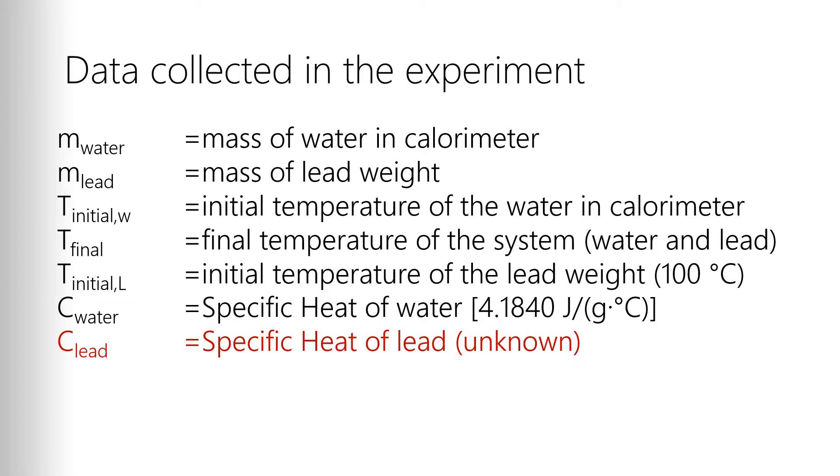Then we're going to measure a number of temperatures. We're going to measure the initial temperature of the water in the calorimeter and the initial temperature of the lead weight. Now the initial temperature of the lead weight is going to be equal to the boiling water it's placed in. Boiling water gets to 100 degrees Celsius, so if we leave the lead weight in there for a period of time, it will absorb the energy to the point that it gets to 100 degrees Celsius.